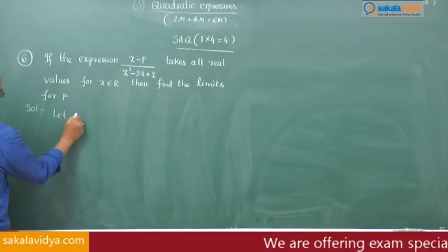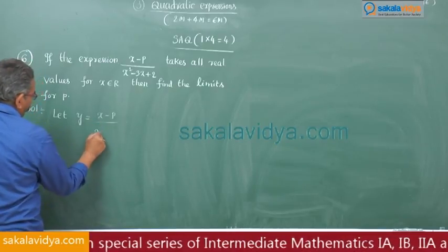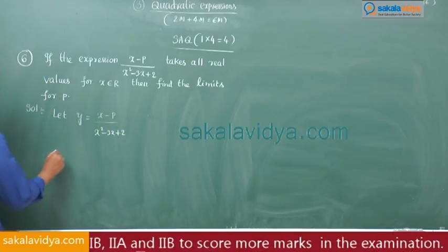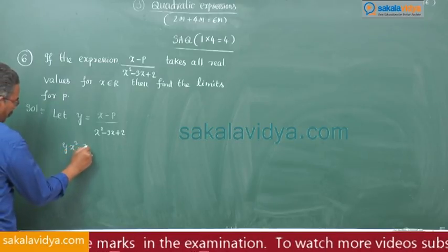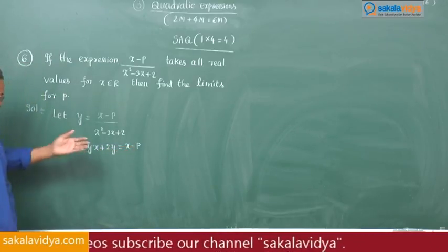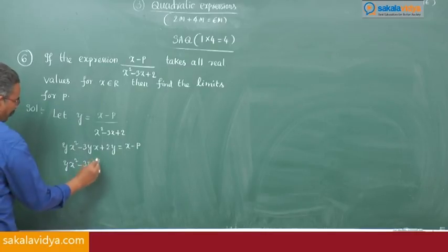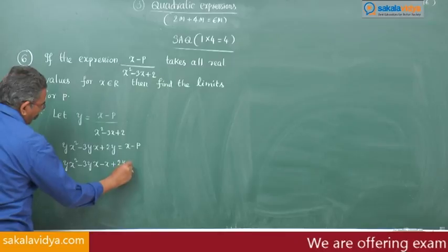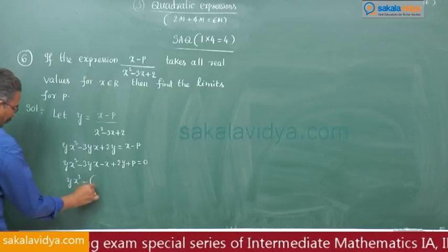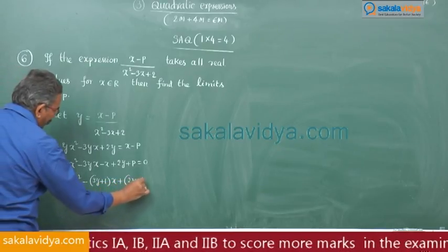Let y equal to (x minus p) divided by (x squared minus 3x plus 2). By cross multiplication: y(x squared minus 3x plus 2) equals x minus p. Bringing x minus p to this side: yx squared minus (3y plus 1)x plus (2y plus p) equals 0.